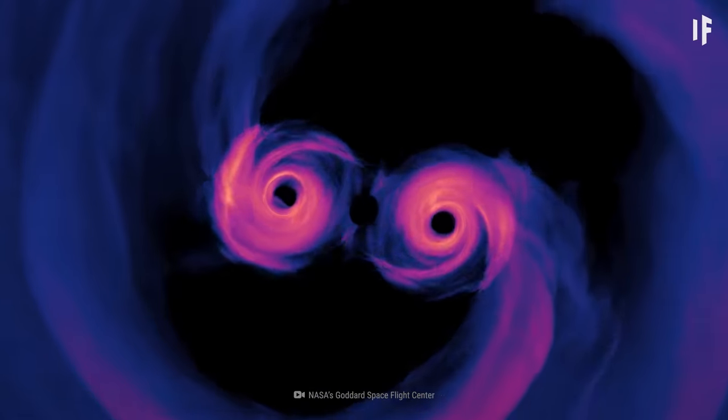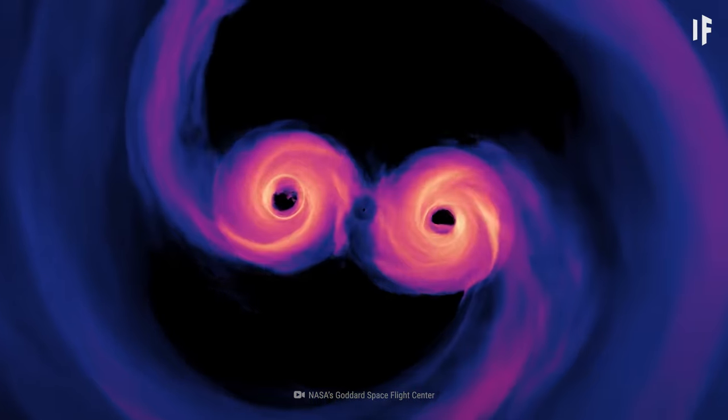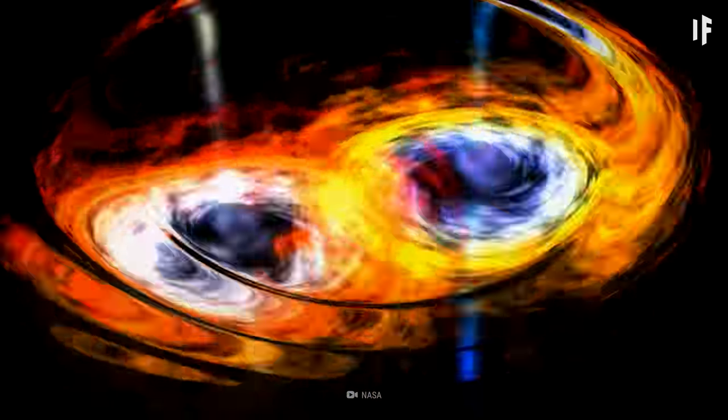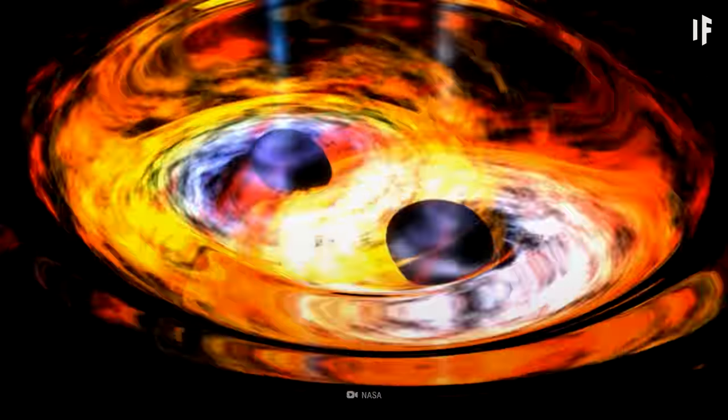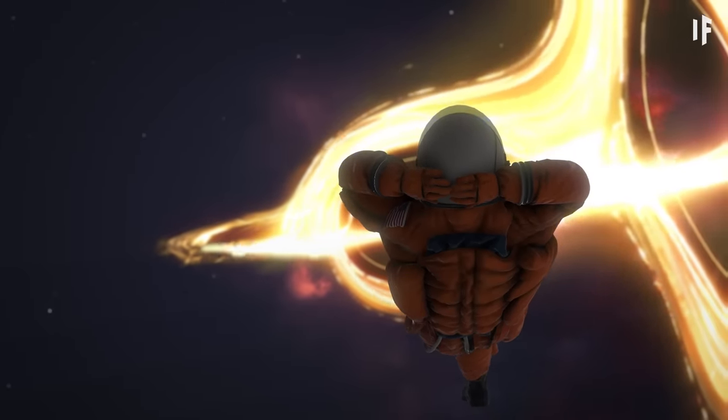First, you'd see the two black holes getting a little closer until they started to orbit each other. They would begin pulling matter and gas into a vortex between them. Get comfortable, because it could take billions of years for their centers to merge.